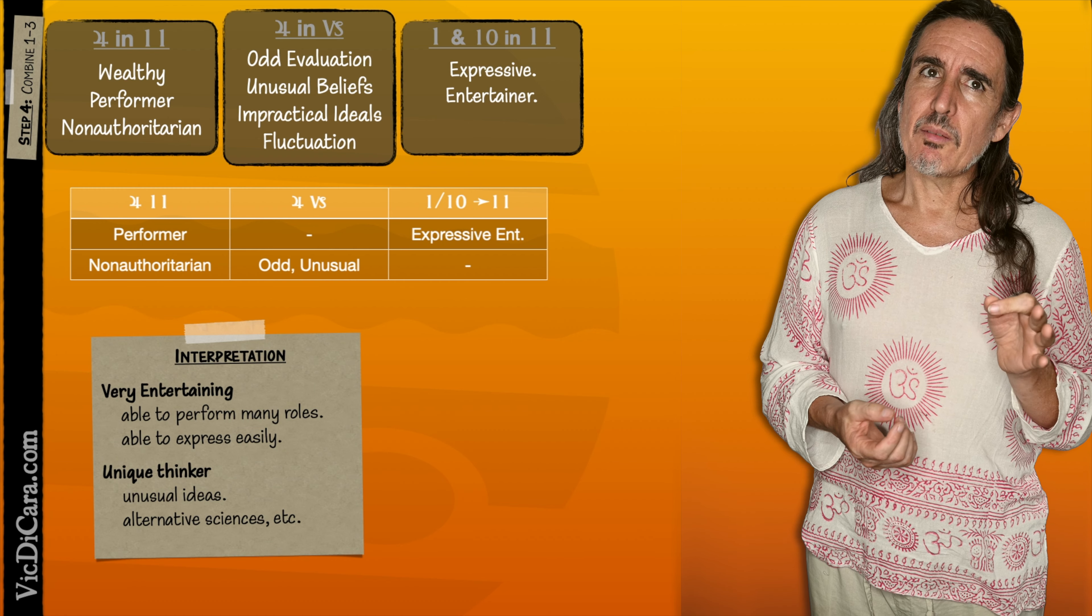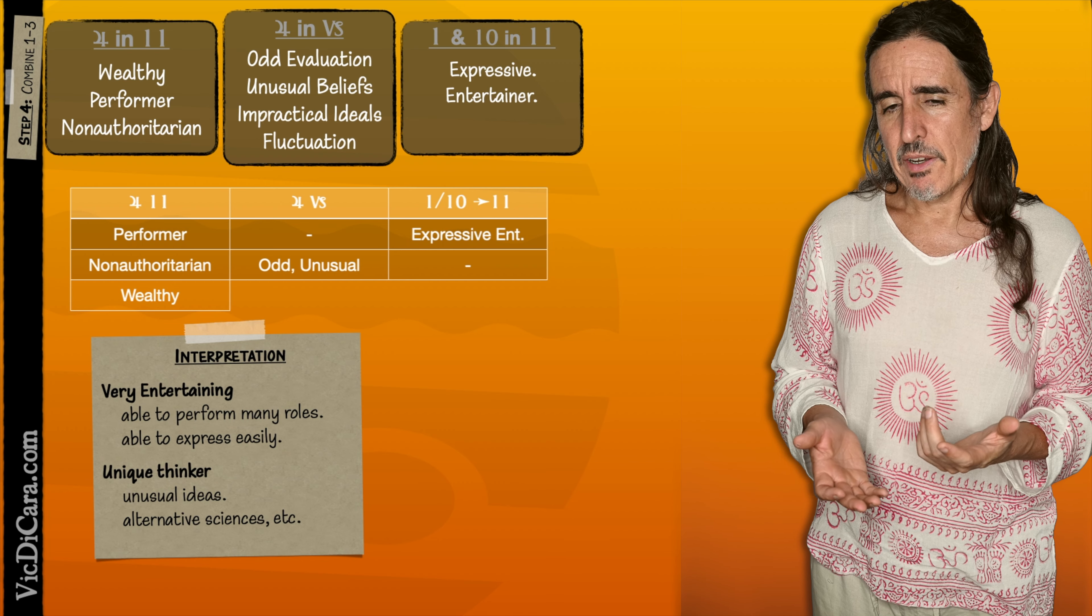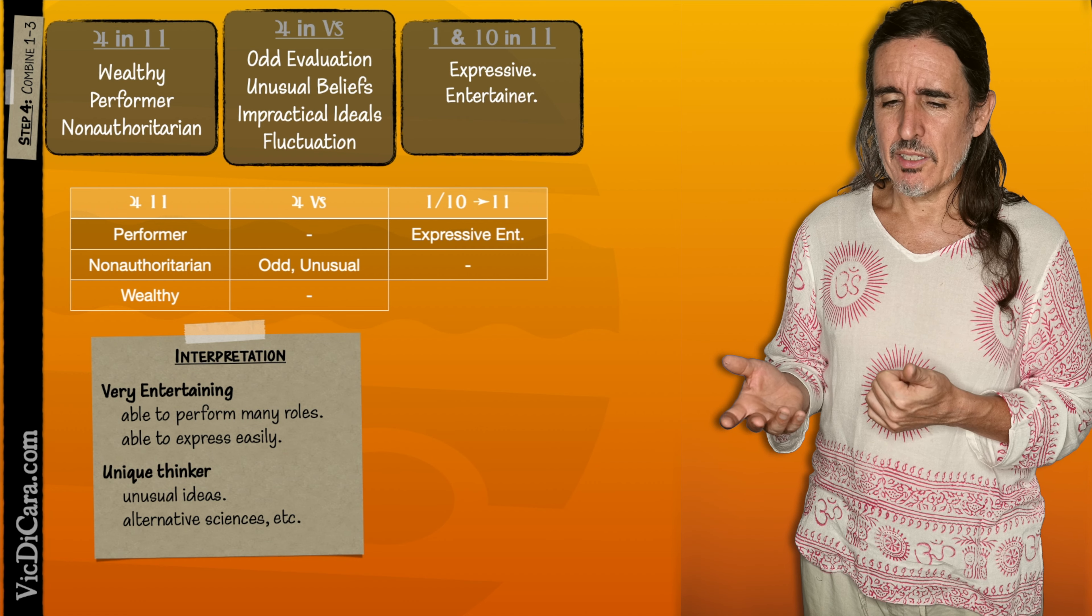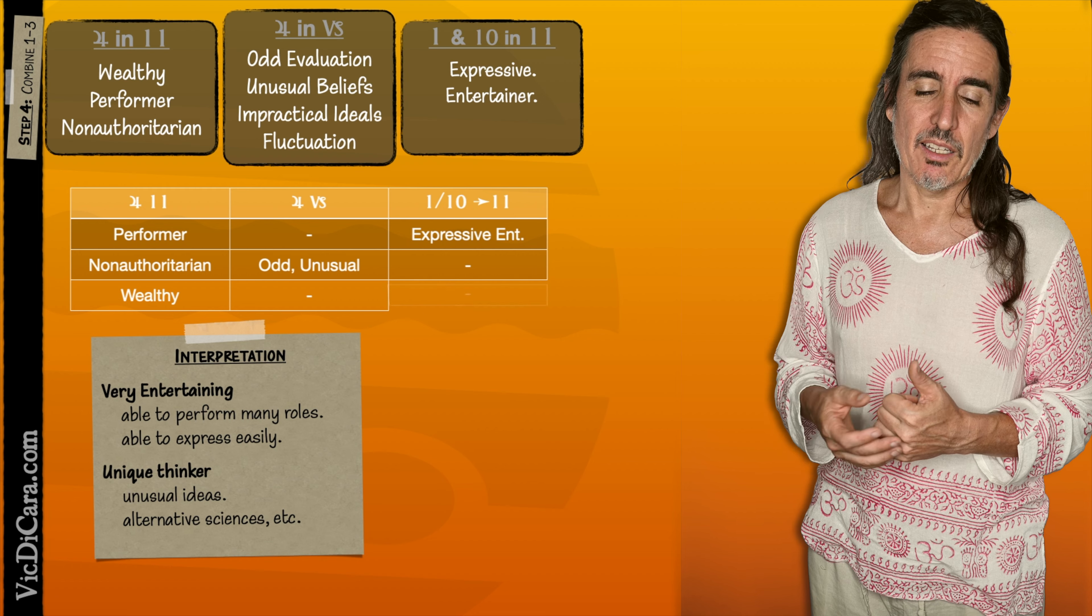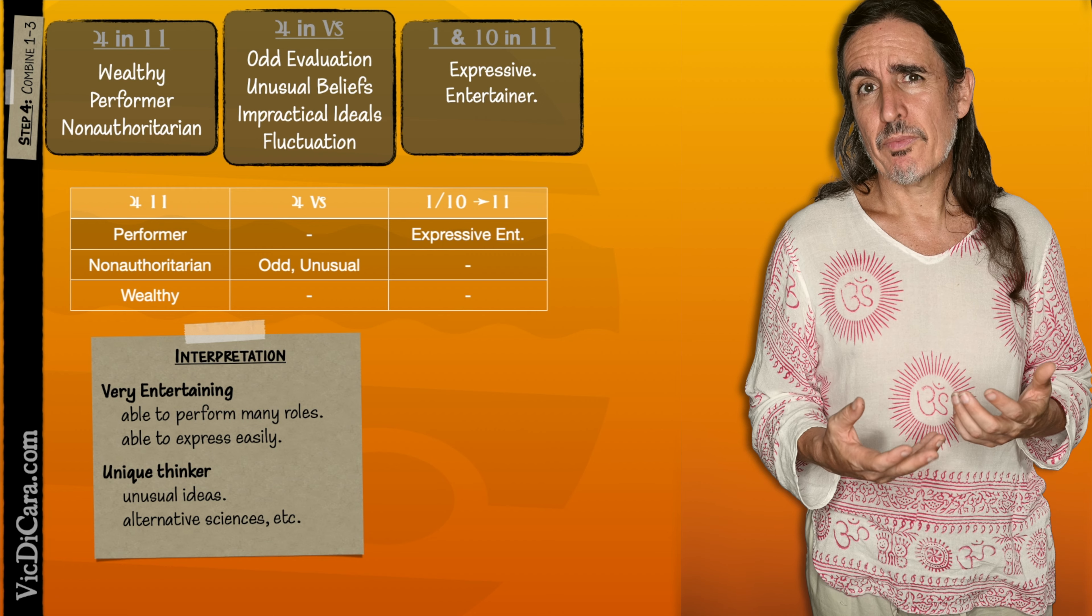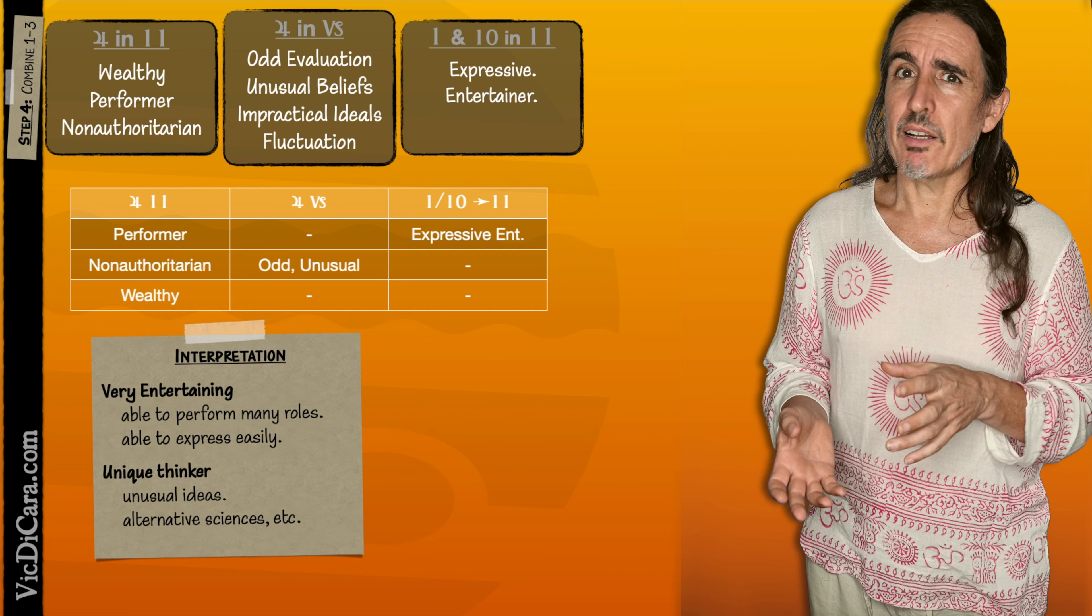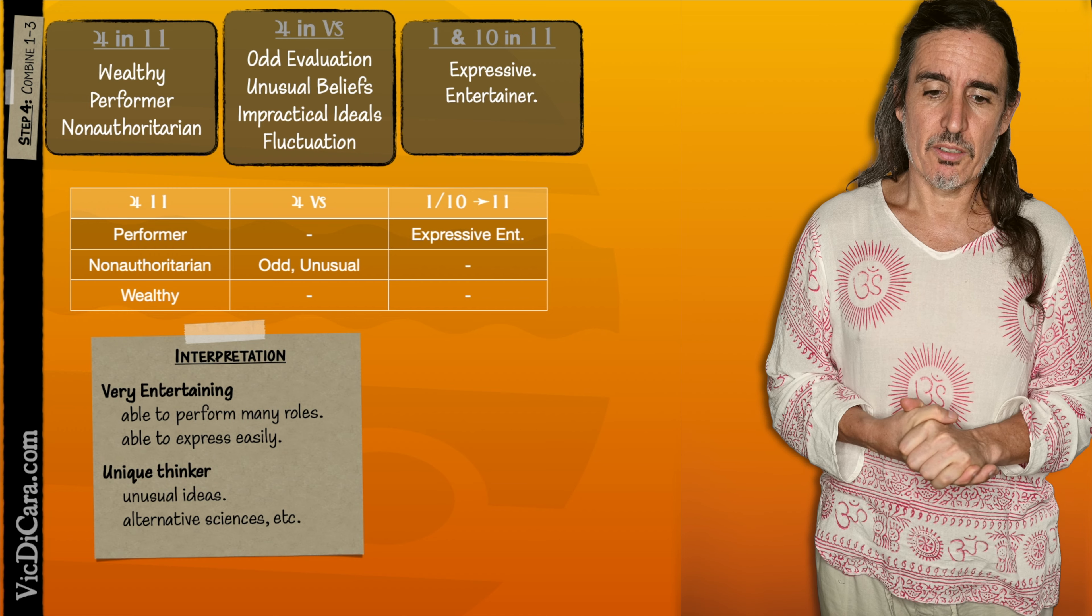Finally, we had Jupiter in the 11th symbolizing wealthiness, but Jupiter in Capricorn doesn't really have anything to do with that. And the 1st and 10th Lords in the 11th house doesn't really have too much to do with that. So this particular trait of Jupiter in the 11th just kind of sits there, as it is, and doesn't get amplified much by the other two conditions, Capricorn and the Lordships.